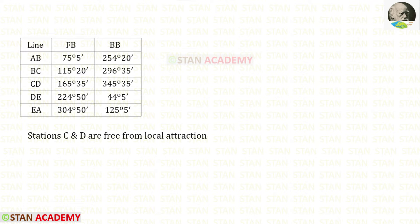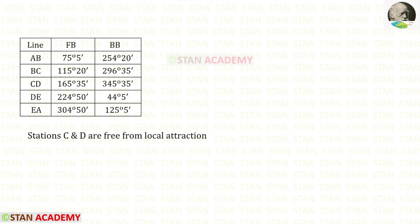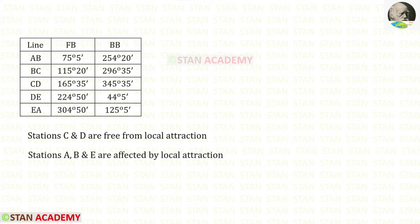Finally let us take EA. Here also you can see that both of the minutes are different, so the difference of backbearing and forebearing will not be equal to 180 degrees. In this case only the stations C and D are free from local attraction. We can suspect that the stations A, B, and E are affected by local attraction.